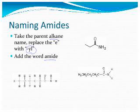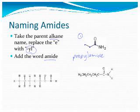So in this structure, how many carbons are present? One, two, three carbons — so this is propyl amide. There are three carbons, so it's propyl amide. How many carbons in this structure? One, two, three, four, five, six — so this is hexyl amide.